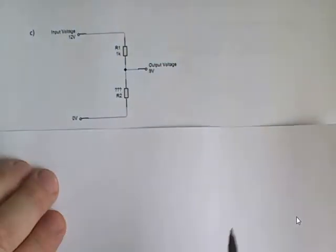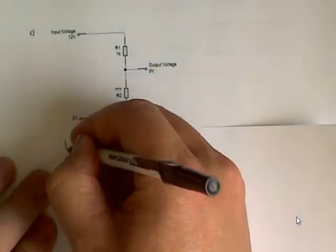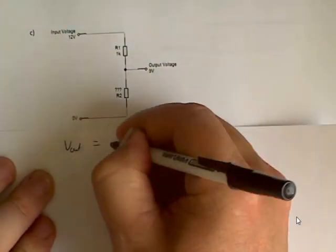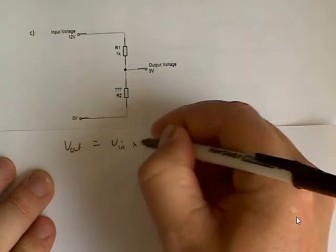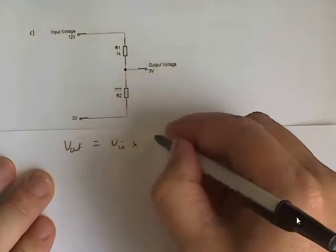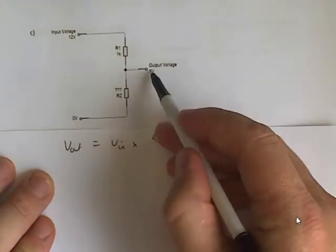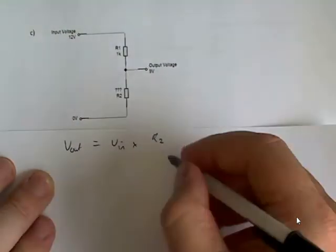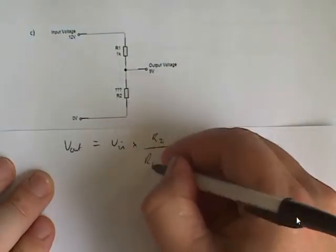I can still use the same formula, so I've got V out equals V in times, in this case still R2, because that's between the output and the zero, over R1 plus R2.